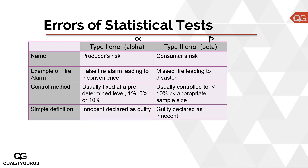A good analogy for Type 1 error is a fire alarm in a building. Sometimes a fire alarm goes off even though there is no fire — that is a Type 1 error or alpha risk. The consequence is inconvenience: you leave the building, the fire brigade comes, checks, and confirms it was a false alarm. For Type 2 error (beta), there was a real fire but the alarm didn't sound, and the whole building burned down — the risk is much bigger and can lead to disaster.